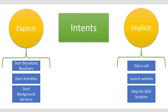Implicit intents, on the other hand, do not name a target. They are often used to activate components in other applications. In the absence of a designated target, the Android system must find the best component or components to handle the intent — a single activity or service to perform the requested action, or the set of broadcast receivers to respond to the broadcast announcement.